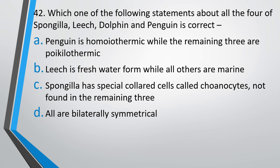The correct answer is option C: sponge has special collared cells called choanocytes, not found in leech, dolphin, and penguin.